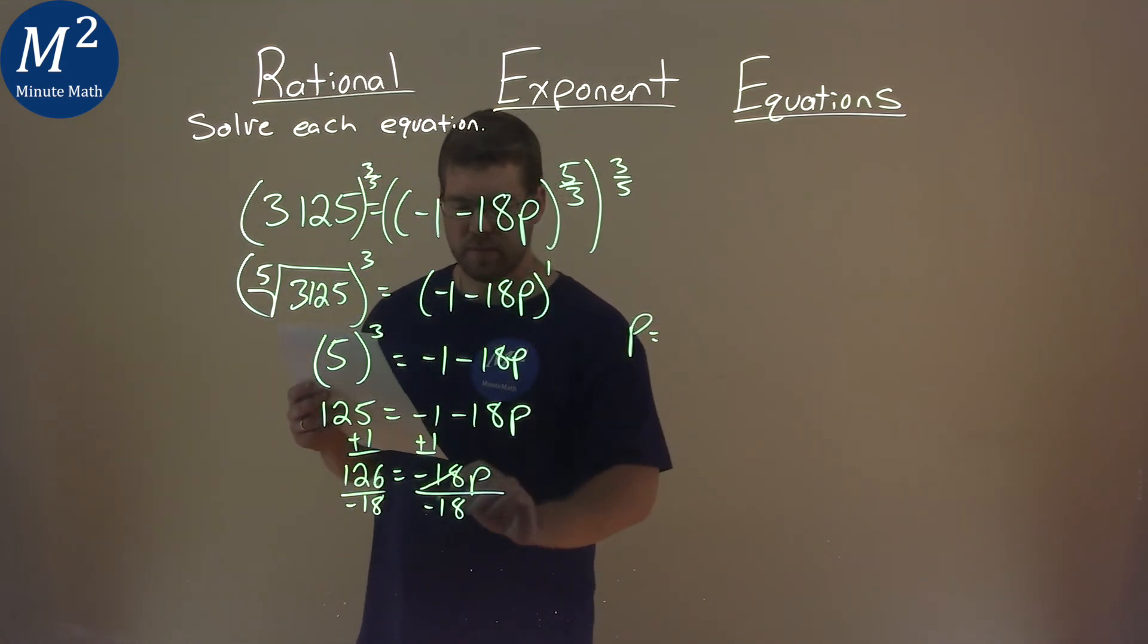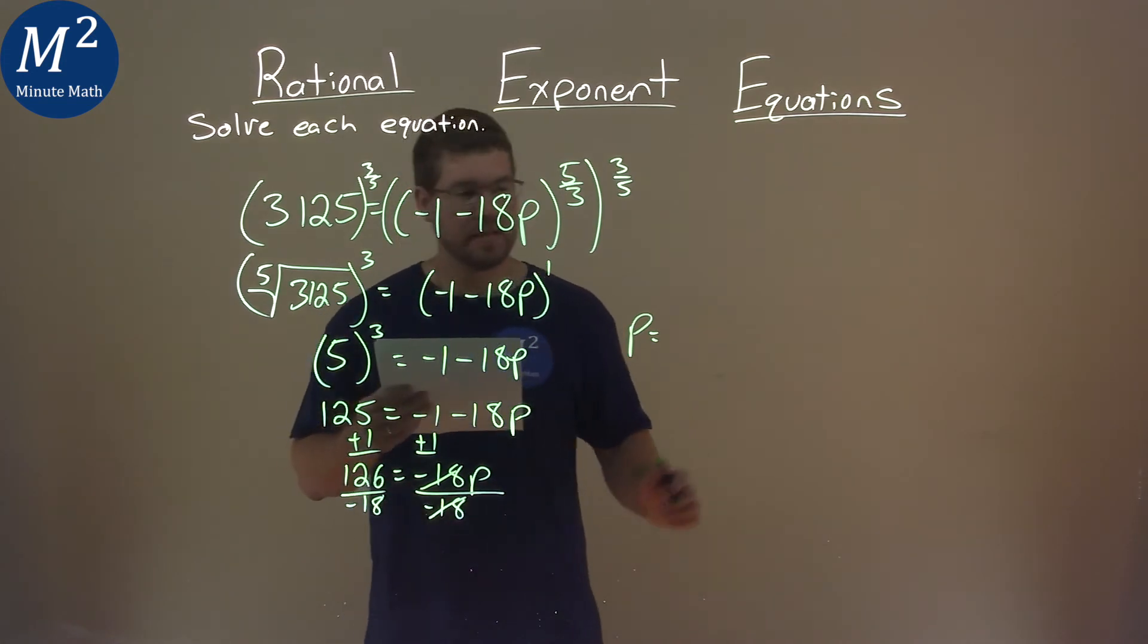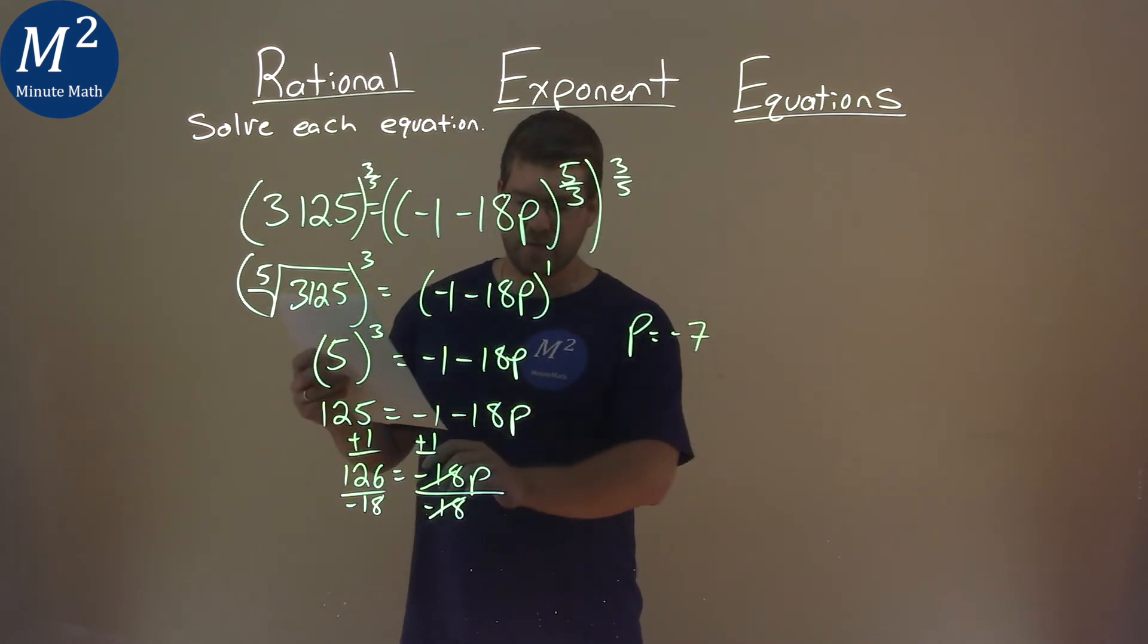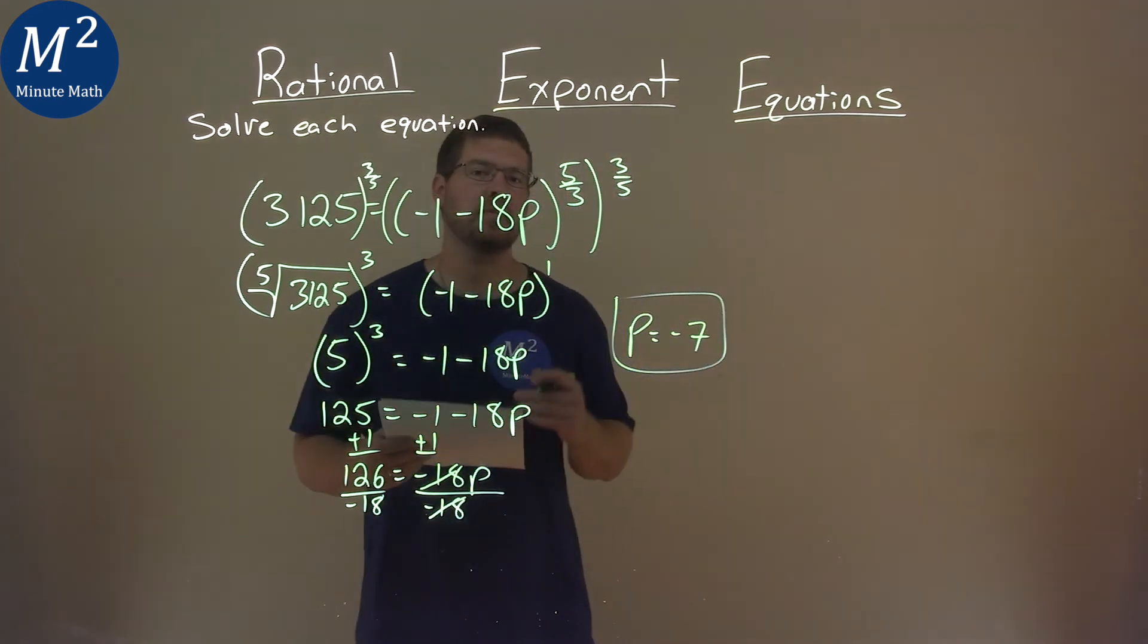Well, p is by itself here. And 126 divided by negative 18 is negative 7. And so, my final answer here is p equals negative 7.